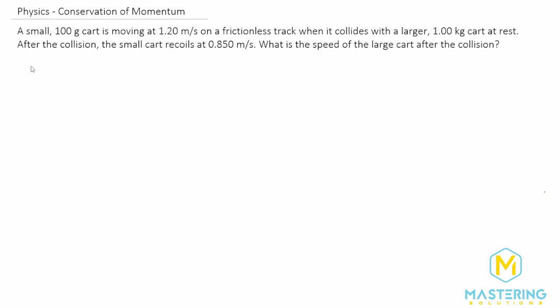So first off, let's go ahead and write down our variables. We know that the mass of the first cart, we'll call it m1, is equal to 100 grams, which is not in SI units, of course. So let's convert that over right now. We know that kilo means a thousand, so there are a thousand grams in a kilogram.